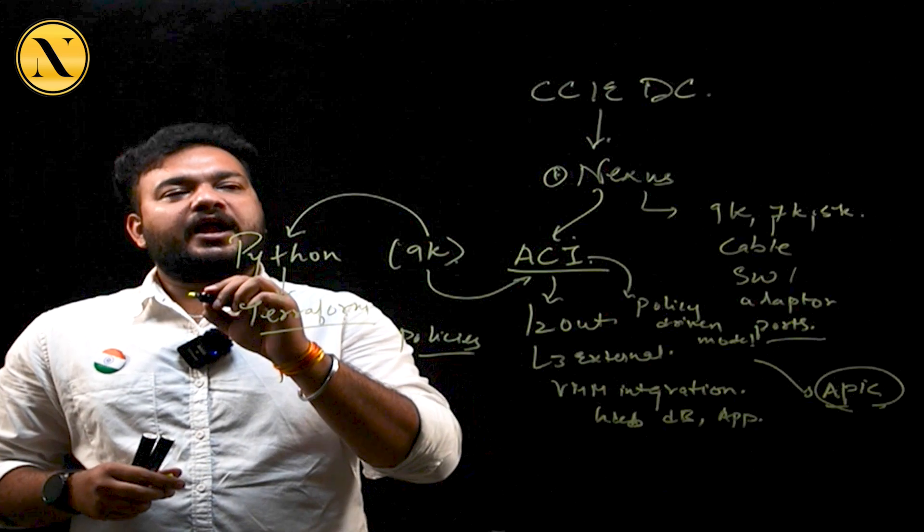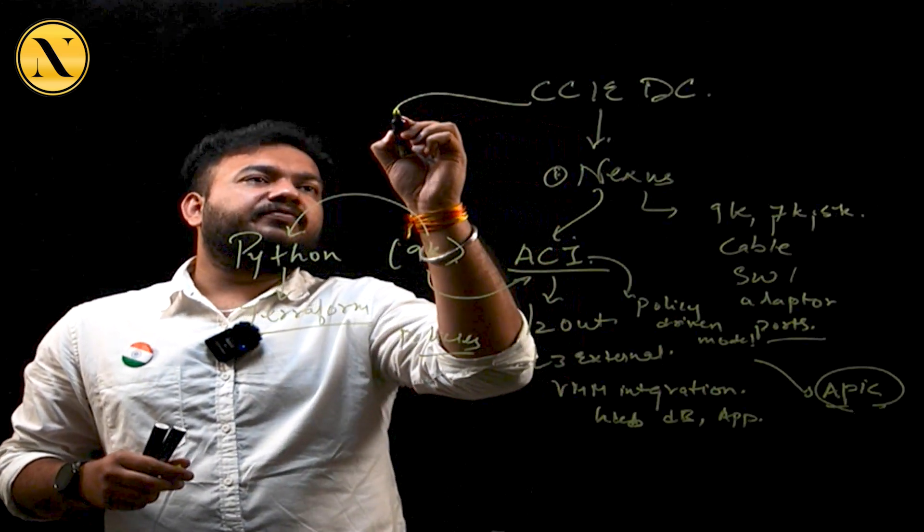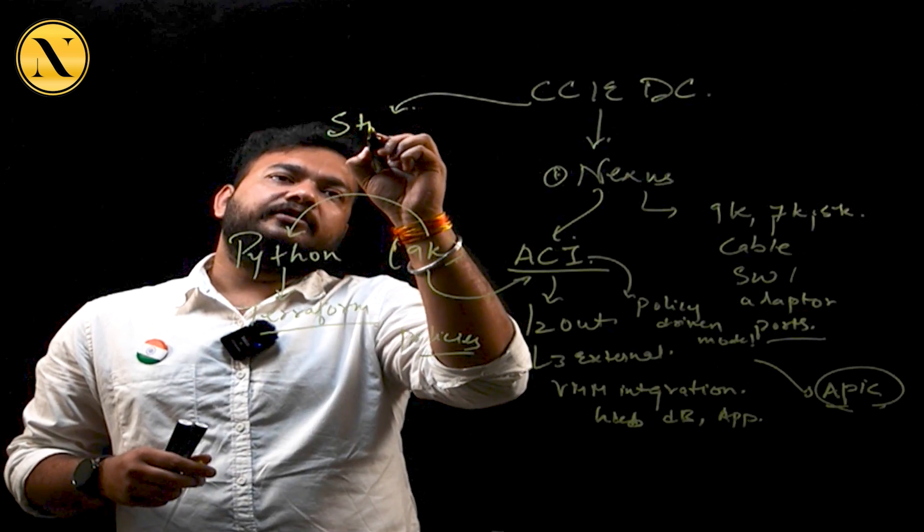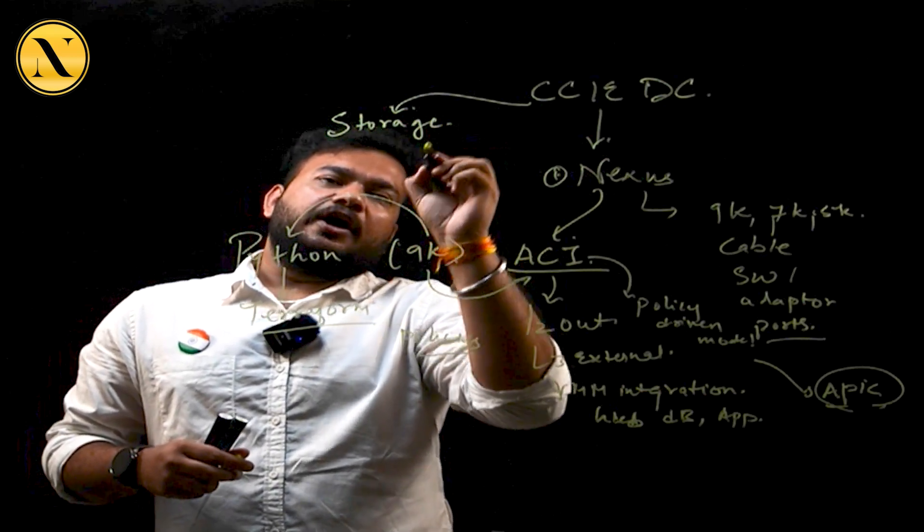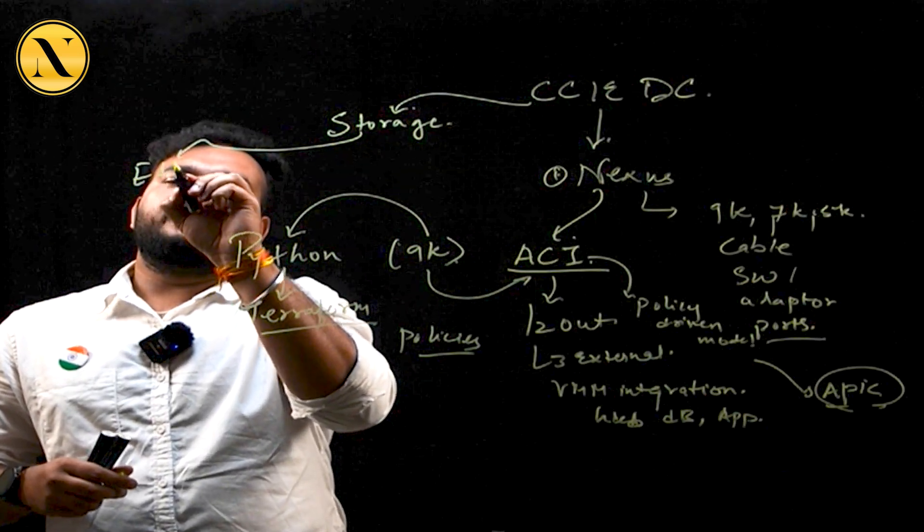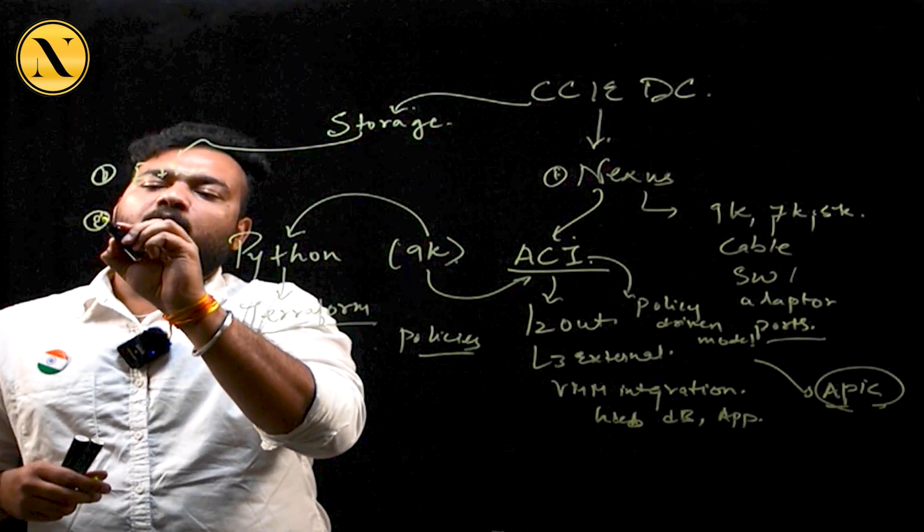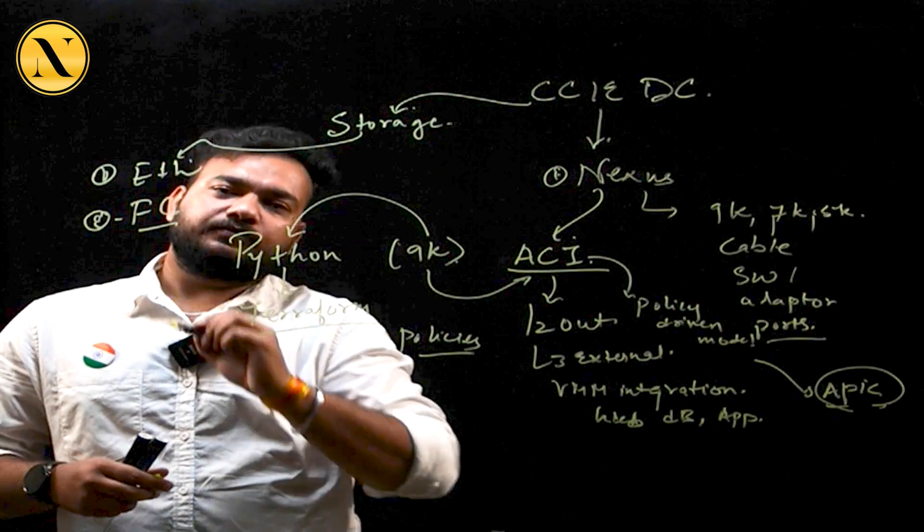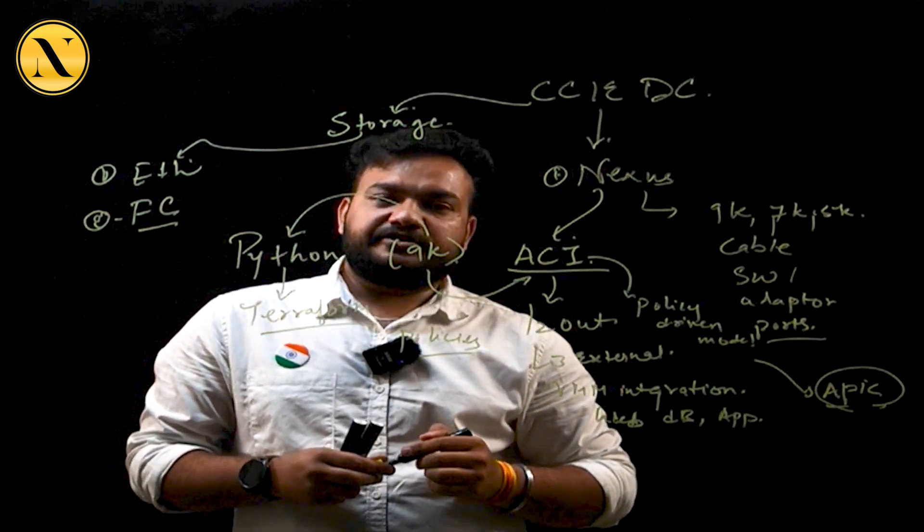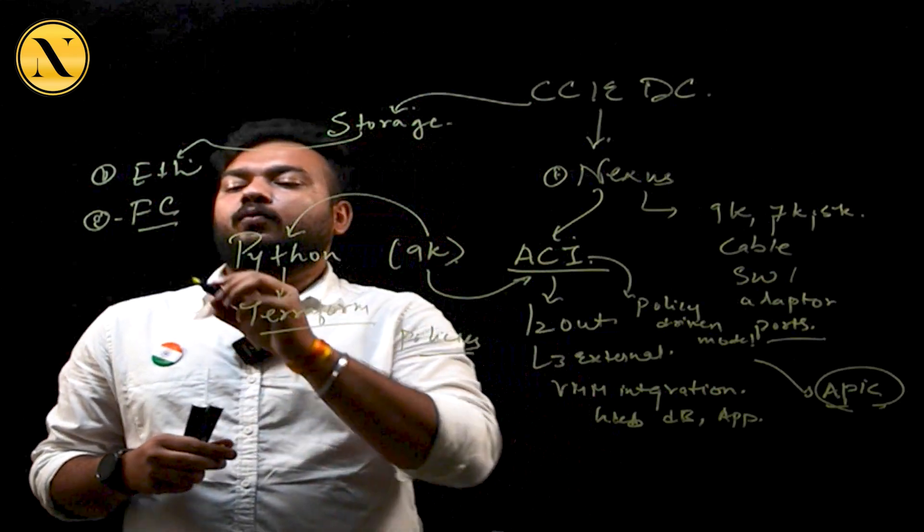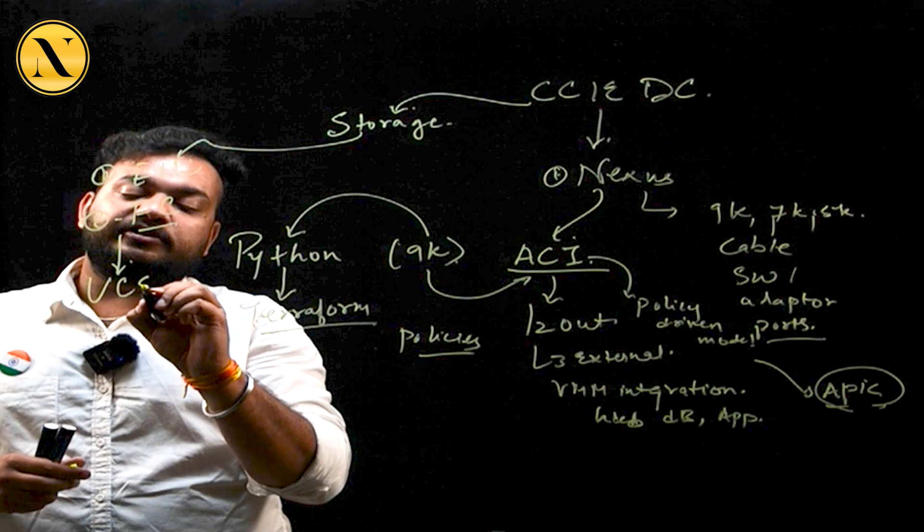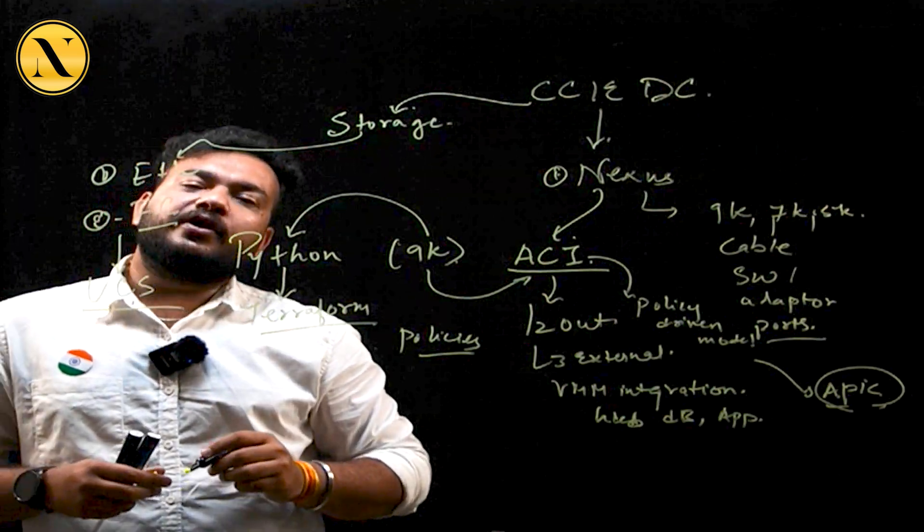Once your ACI is being done, then in the world of data center, we're going to move towards an important topic called storage in which I'm going to introduce you to two different technologies. One is your Ethernet and the second one is your Fiber Channel. Once these two technologies are being discussed, after that we're going to move ahead to one of the major segments inside the storage which is called UCS as Unified Computing System.